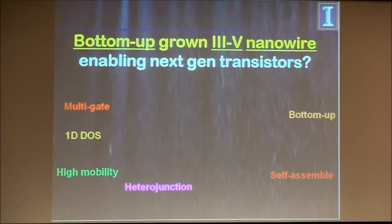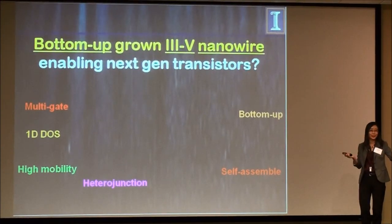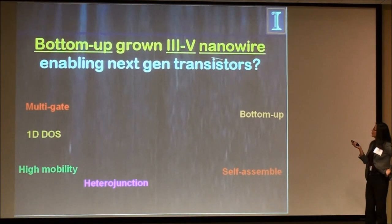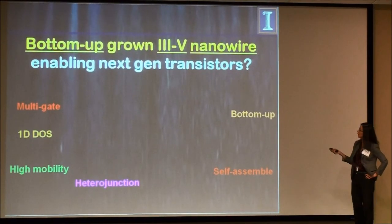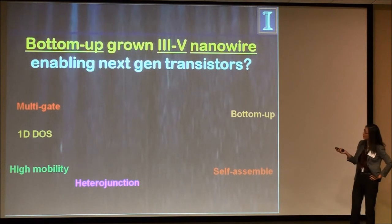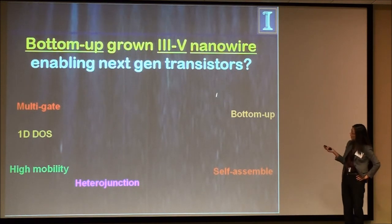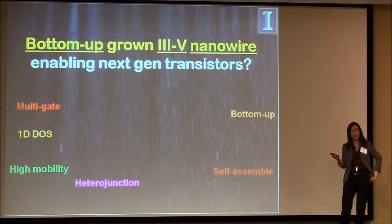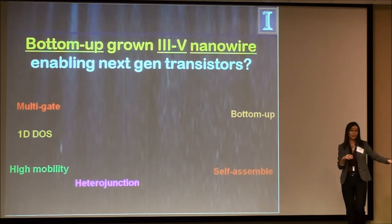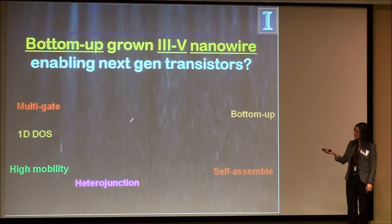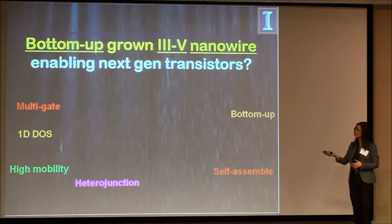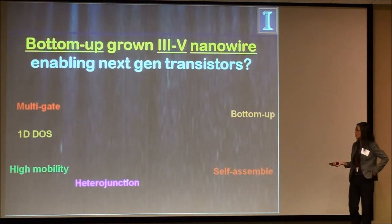We do both top-down and bottom-up, but today I want to focus on the bottom-up aspect. The question is: what does nanowire bring to the future of transistors? Nanowire is a one-dimensional structure, so there's the property of one-dimensional density of states, enabling devices operating in a regime that bulk devices cannot. Nanowires naturally have a 3D configuration, enabling multi-gate, which is important to reduce leakage as transistors get smaller. For III-V, the electron mobility is high, which is advantageous even in the ballistic transport regime.